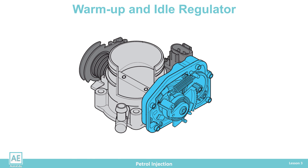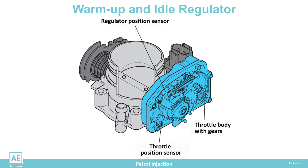All control elements are integrated within one housing on the throttle module. This includes the throttle body with gears, the throttle position sensor, the regulator position sensor, the idle speed sensor, and the failure spring.